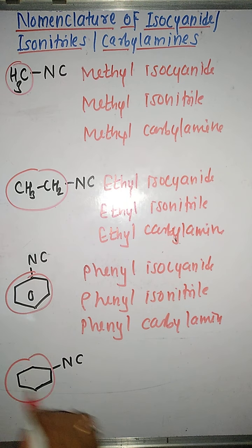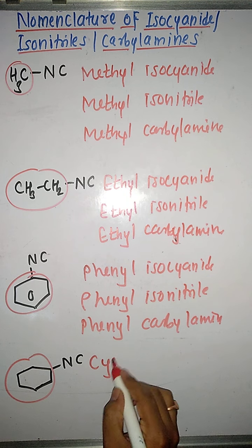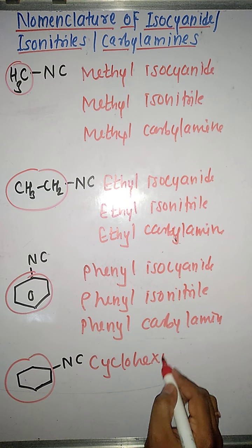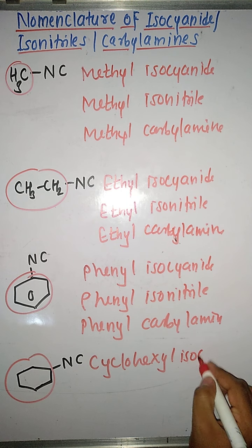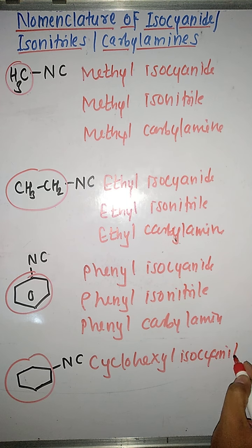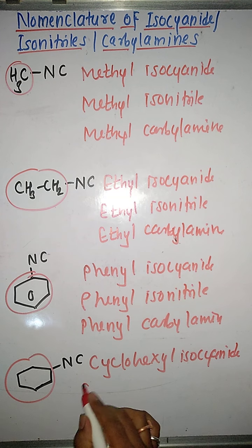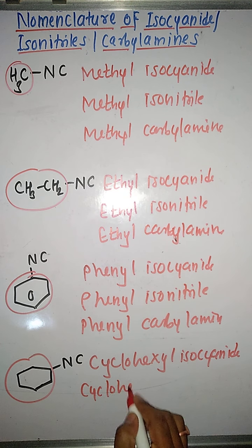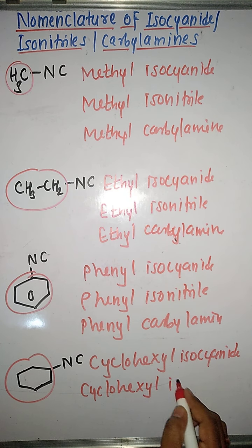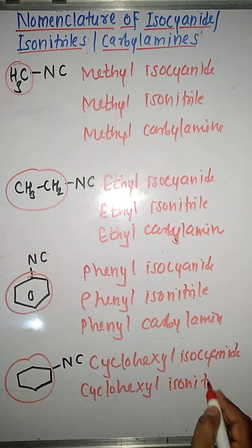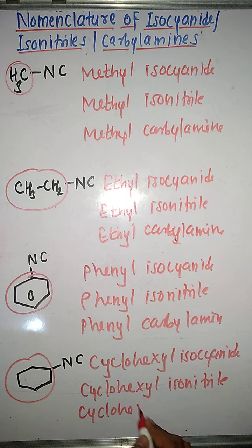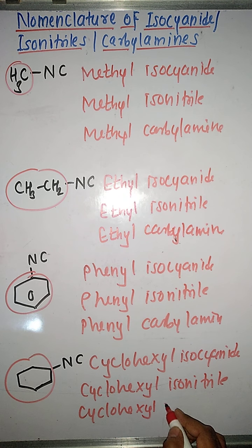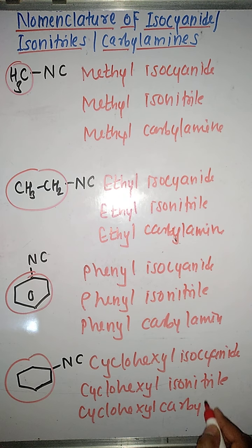In the same way we are having cyclohexyl group here. So we will write the word cyclohexyl first. At the end the word isocyanide should be written, or we may use cyclohexyl isonitrile, or another name that is cyclohexyl carbilamine.